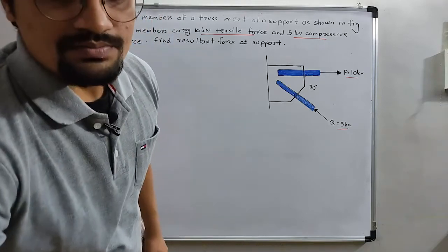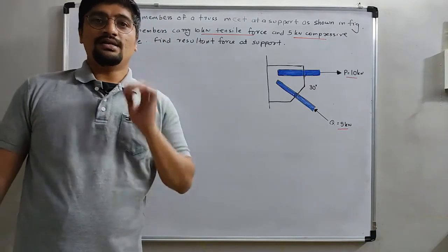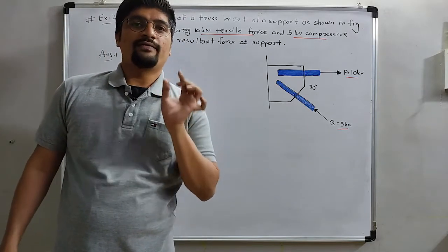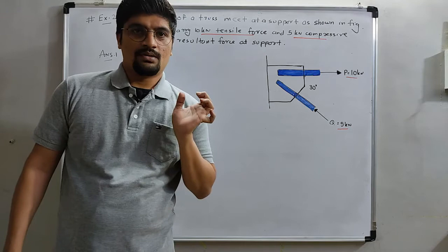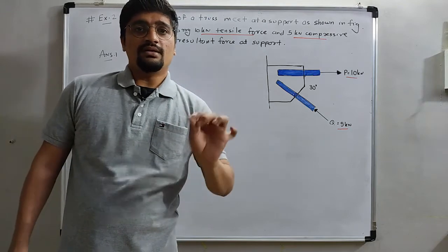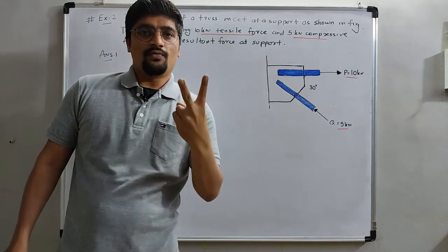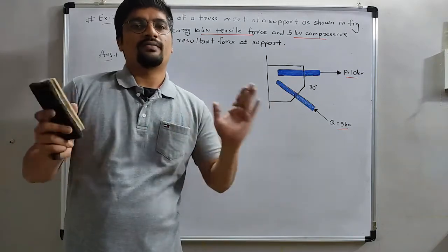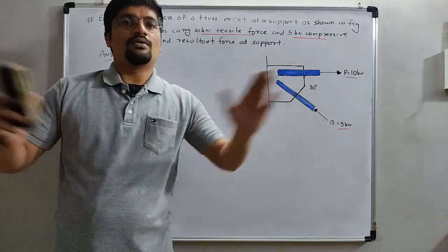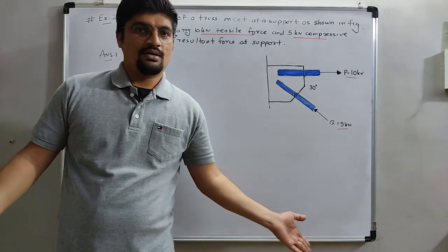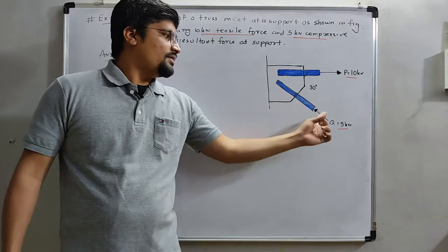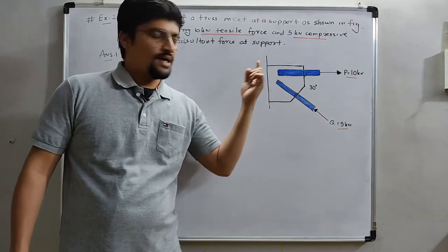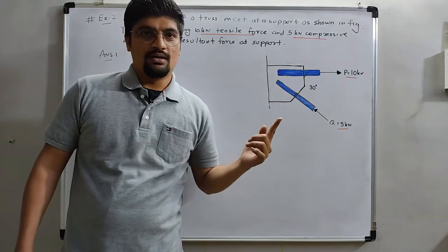As we have studied the law of parallelogram, in that, I have drawn one figure of the parallelogram. It is clearly seen that two forces, two concurrent forces P and Q, go far away from the point, means in the outward direction. But here, we can see that one force is going towards the point and another one is far away.